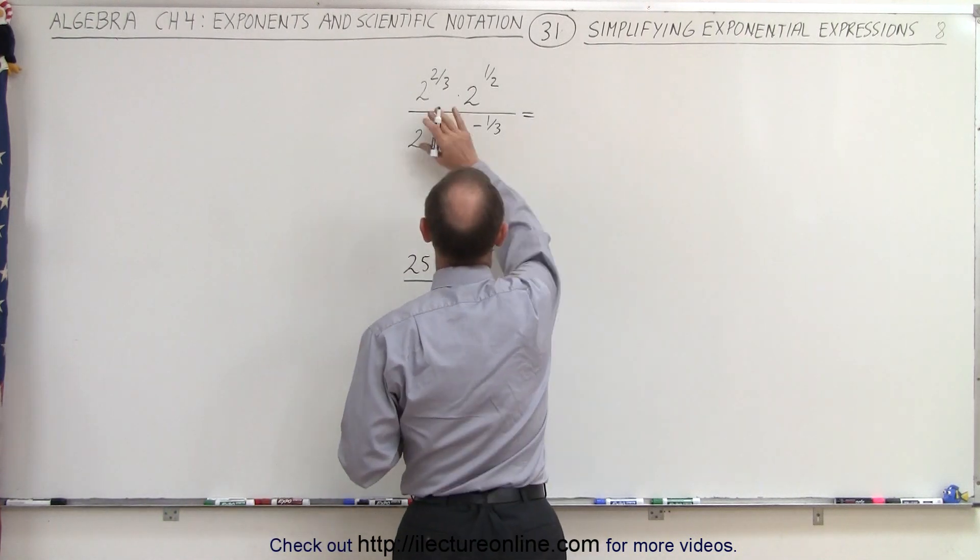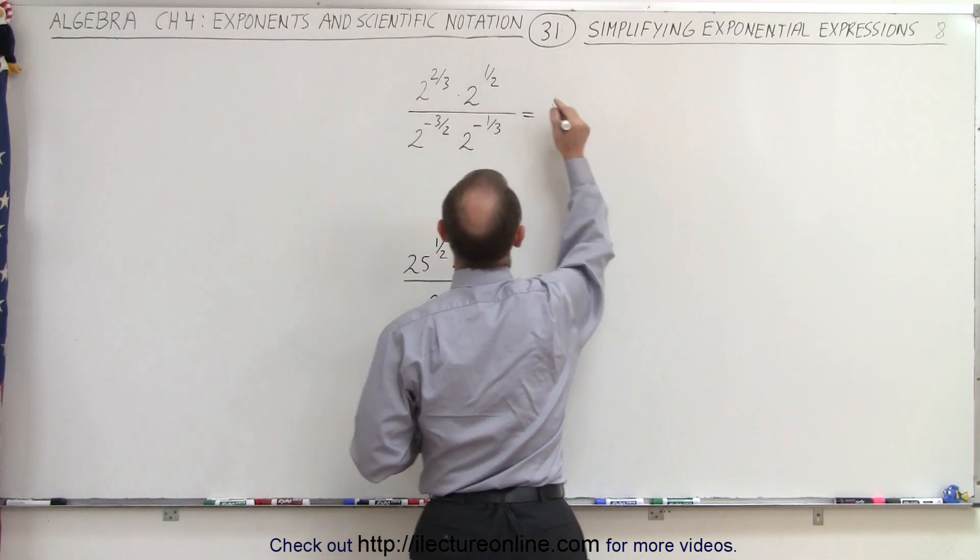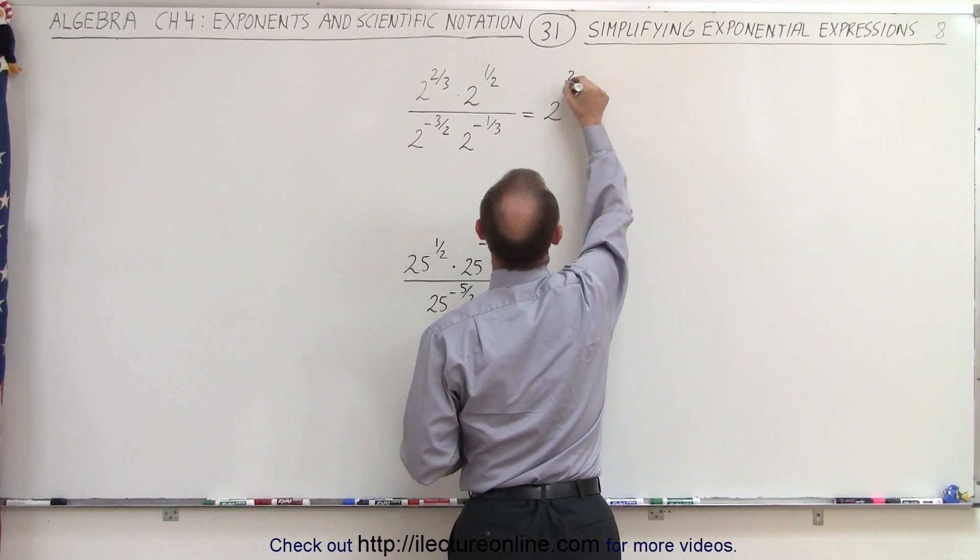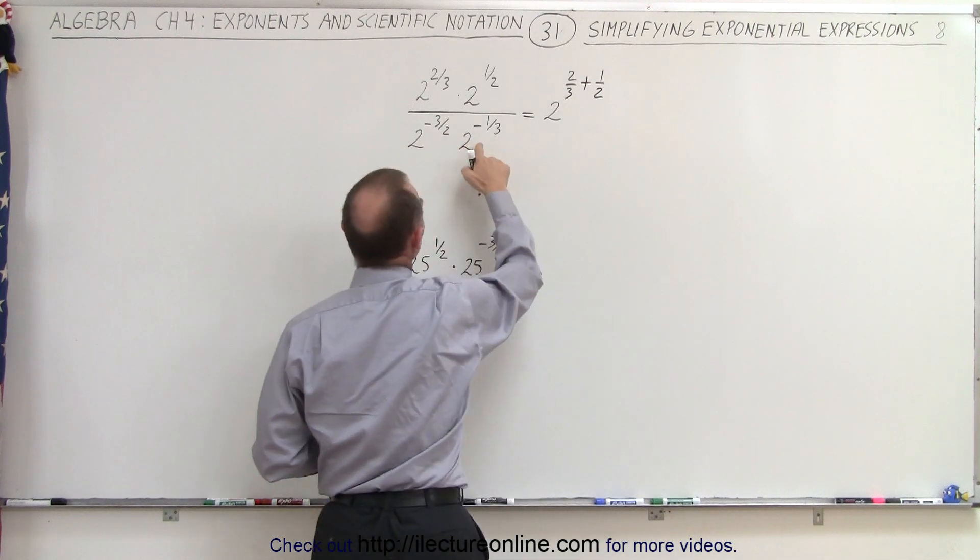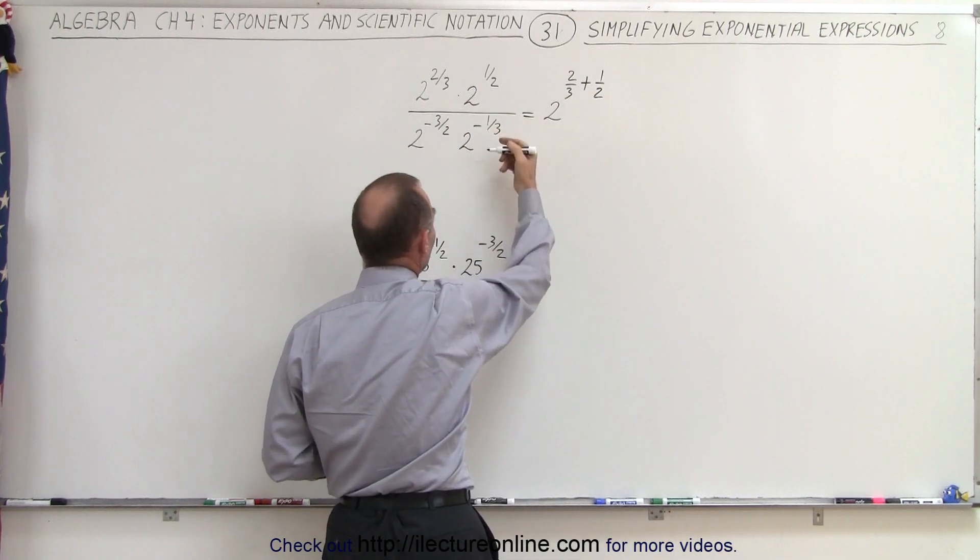First of all, when we multiply and the bases are the same, we add exponents. So this becomes 2 to the 2 thirds plus 1 half. And then in the denominators, if we divide, we have to subtract exponents.